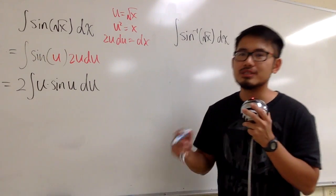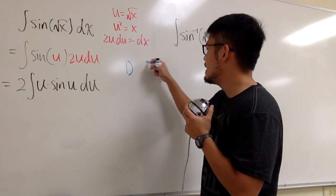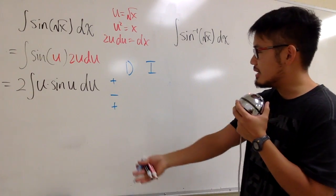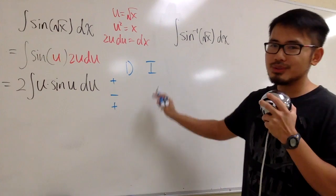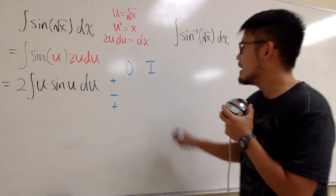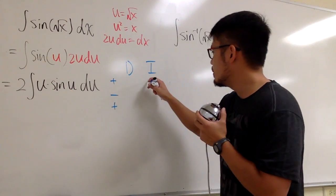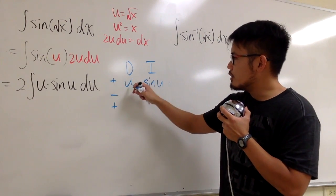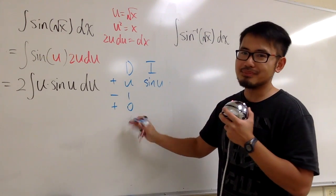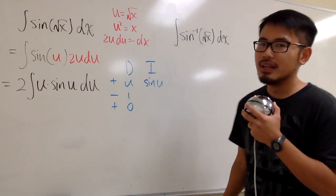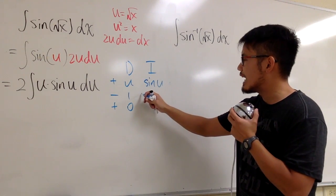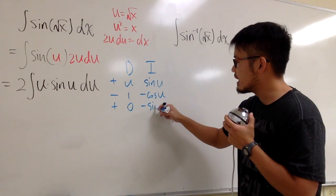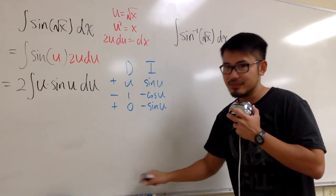This integral requires integration by parts. I will show you the most popular method, which is the DI method for integration by parts. Be sure to have plus, minus, plus, minus on the left-hand side. If you want to know how to do this, please check out the video in the description. I'm going to integrate sine u and differentiate u.